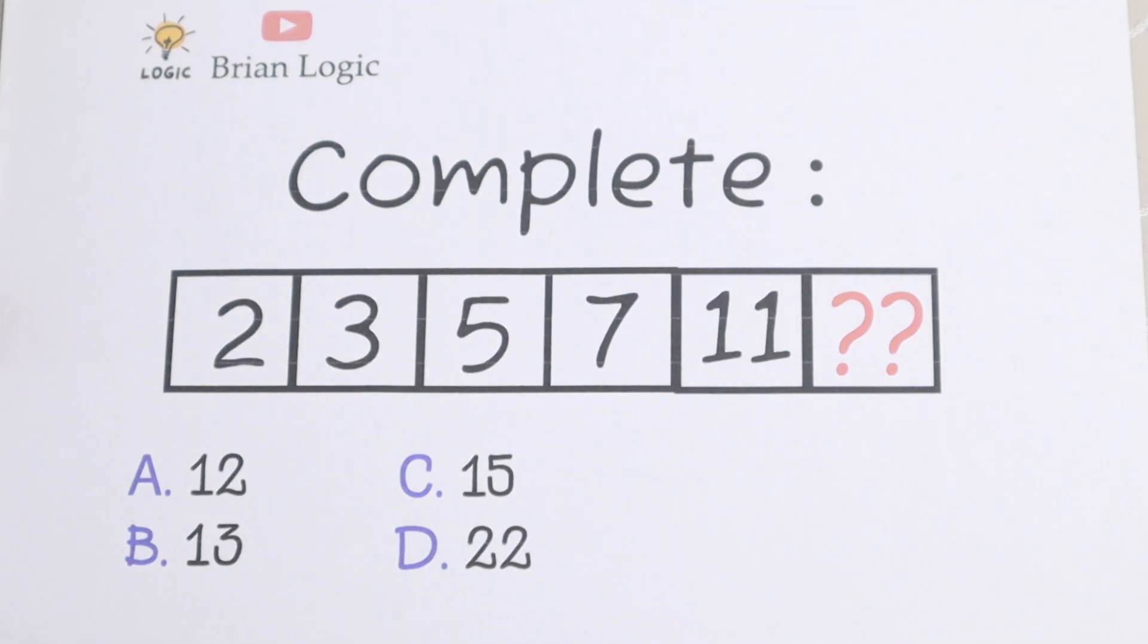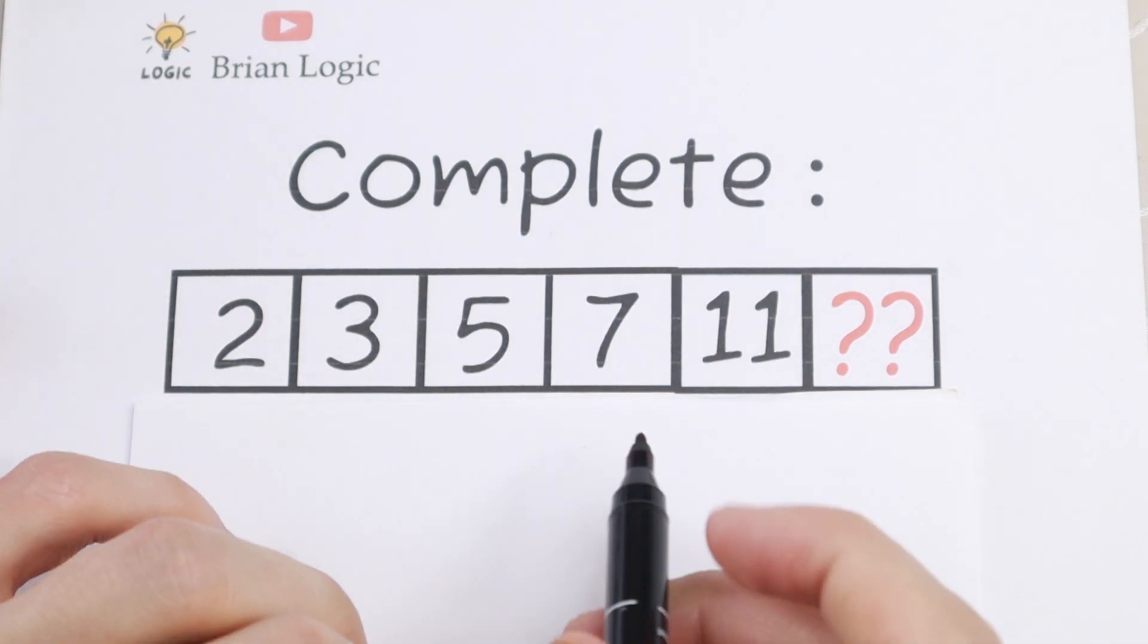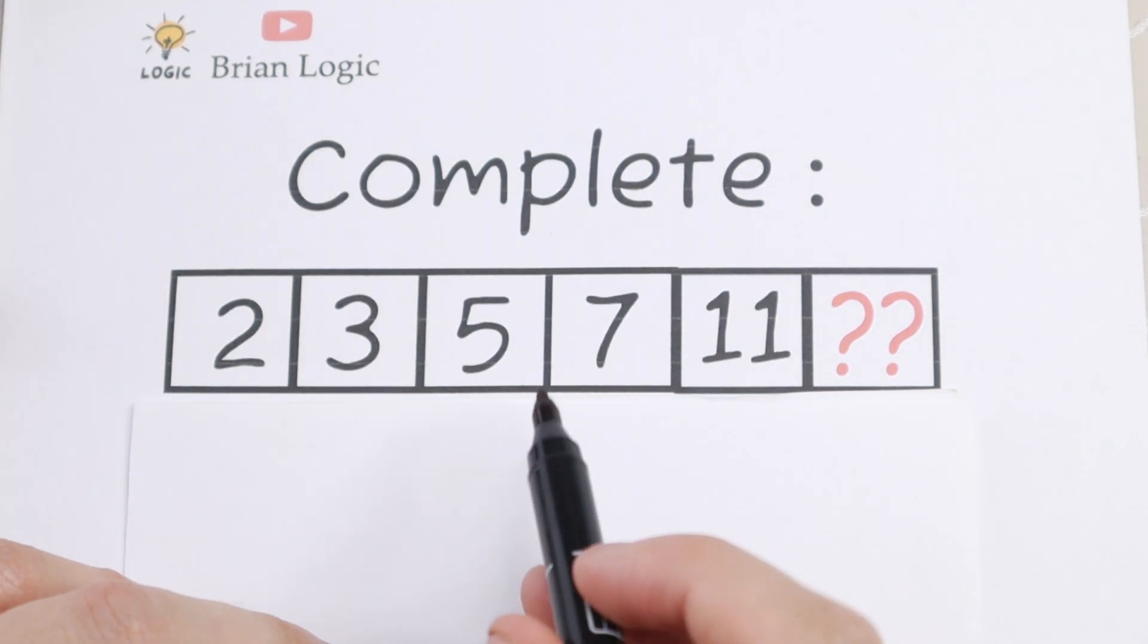So let's pause one option and of course let's try to solve it. First take a look. We have a lot of numbers: 2, 3, 5, 7 and 11. So let's try to find the pattern between all these numbers for example using addition.